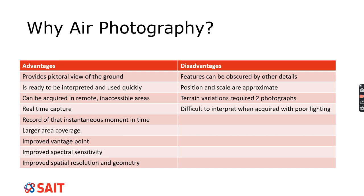Now for some disadvantages. If you take a photograph and you have trees, sometimes those trees can obscure other information we're trying to get. For example, if I'm trying to look at some sort of soil contamination underneath trees, I may not be able to see that contamination. I might be able to identify an issue because of the health of the trees, but I can't actually see what's going on in the soil itself.